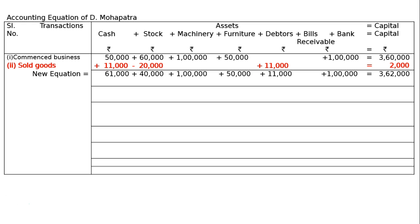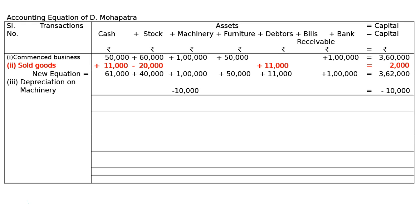Transaction 3: Depreciation on machinery at 10%. Machinery is worth rupees 1 lakh; 10% for the whole year is 10,000. Depreciation is an expenditure, so it will be deducted from machinery and deducted from capital. A new equation results.